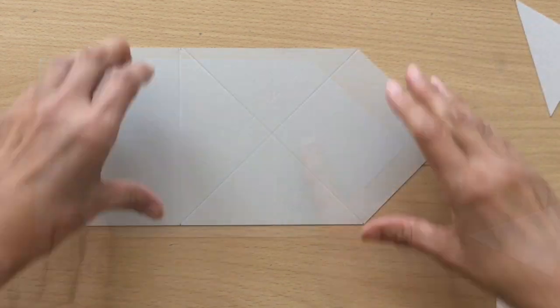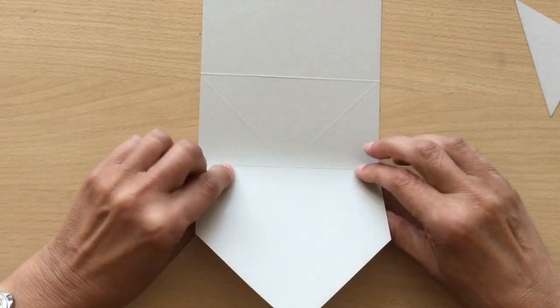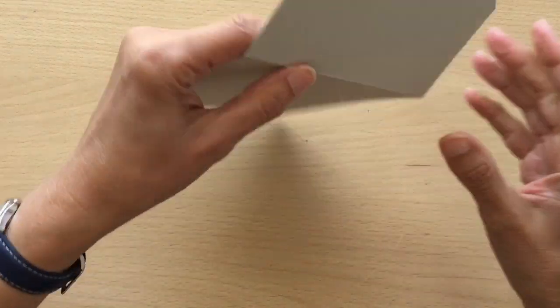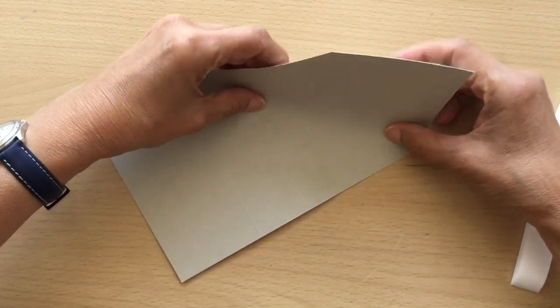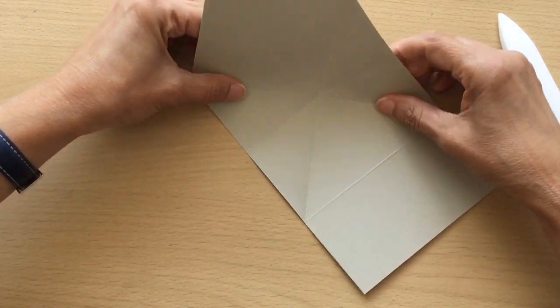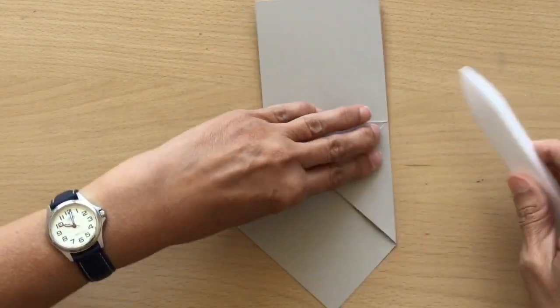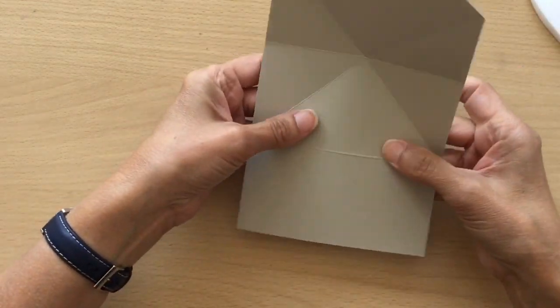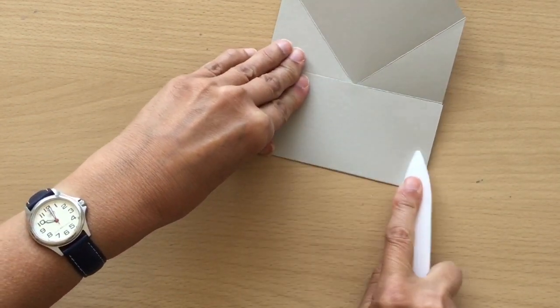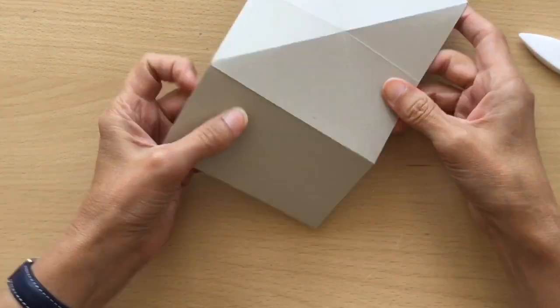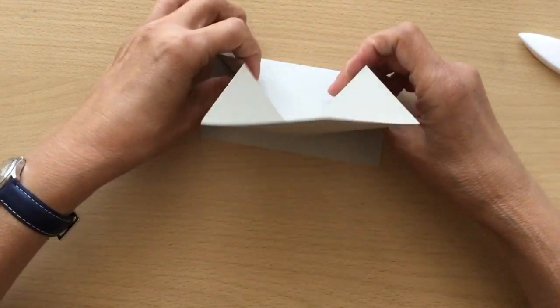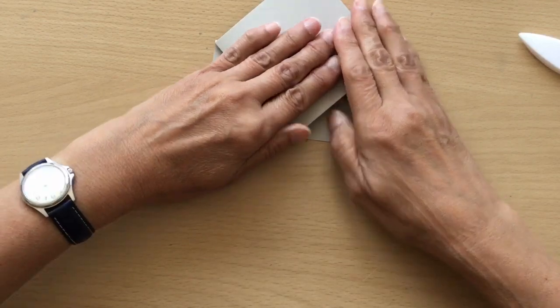We're going to fold and burnish our card. We're going to start with folding in the center and burnishing, and then we're going to start folding these diagonal lines.